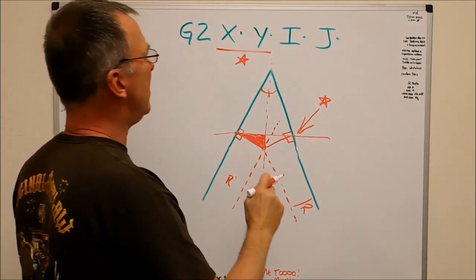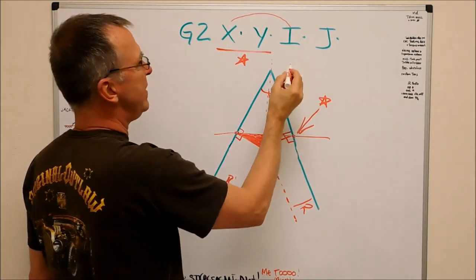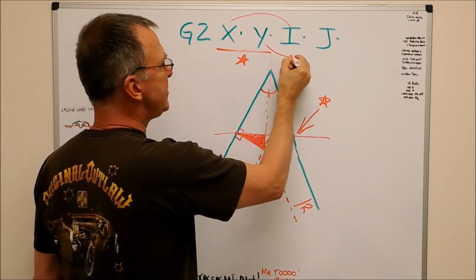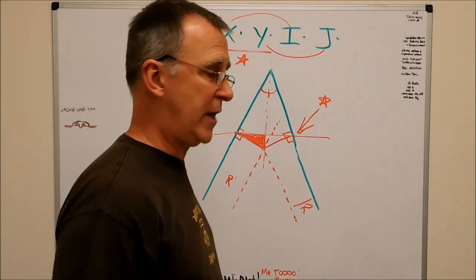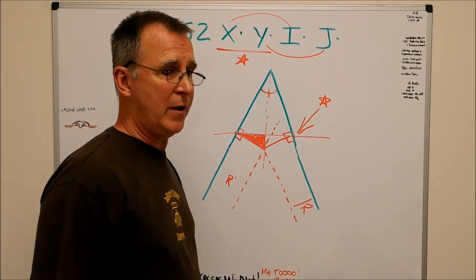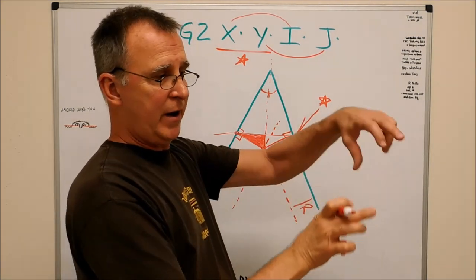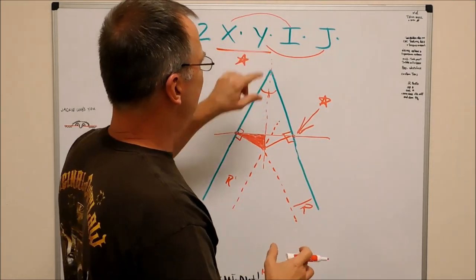The i value always relates to the x and the j value always relates to the y. Like when you say it, x, y. Nobody says y, x. Everybody says x, y. You can do the same thing with i, j. So, just break it in half and there you go. x, y, i, j. That's how they go together.